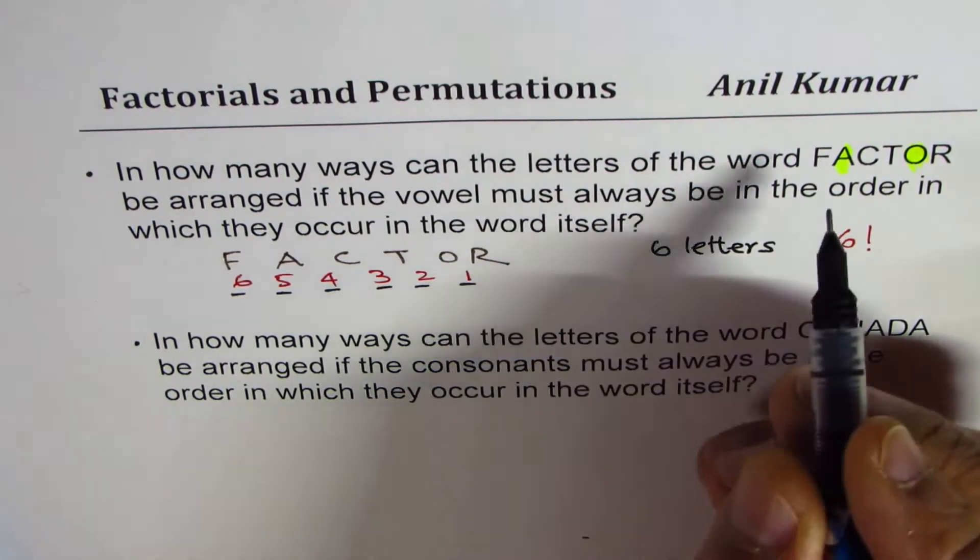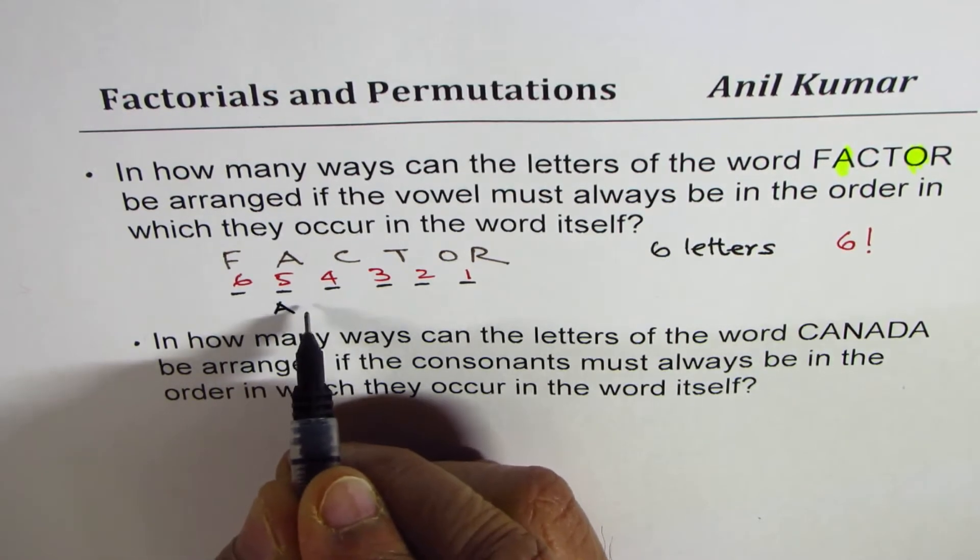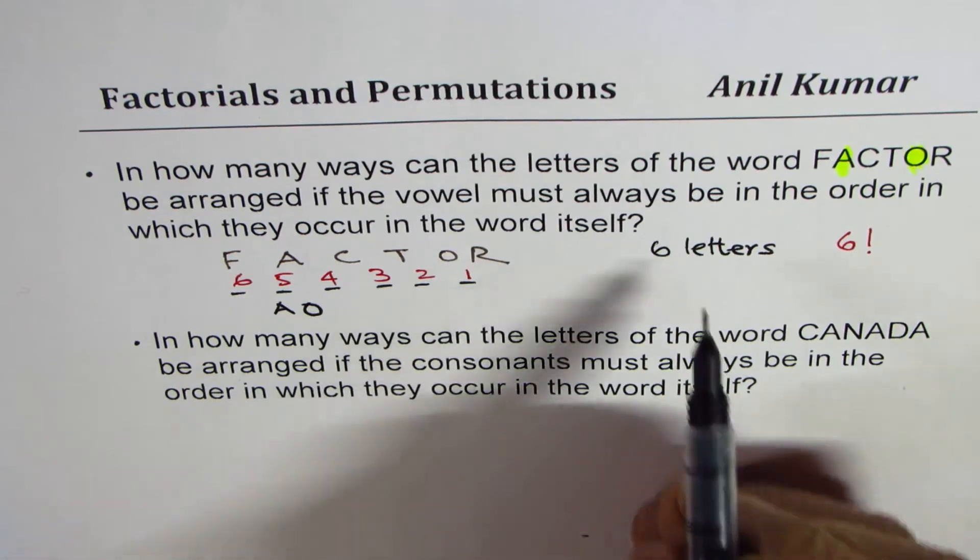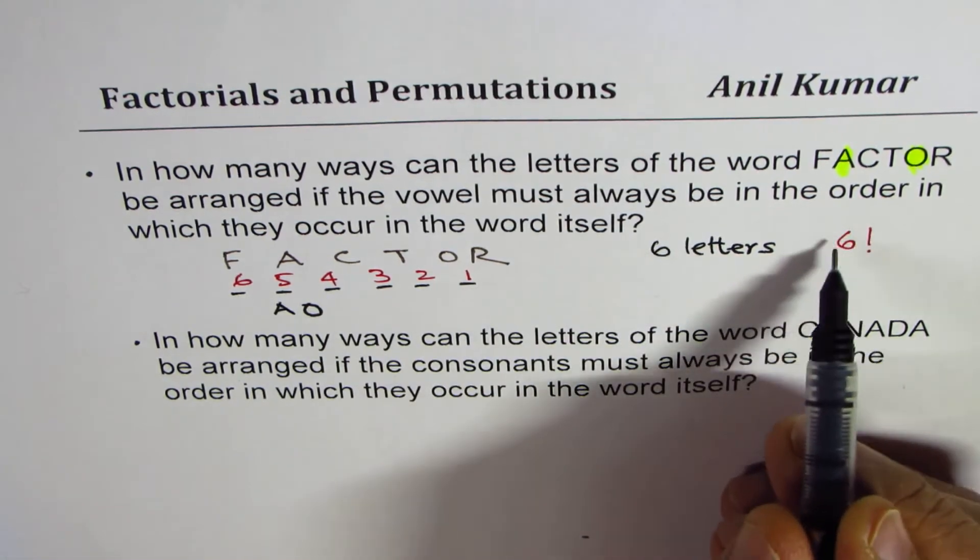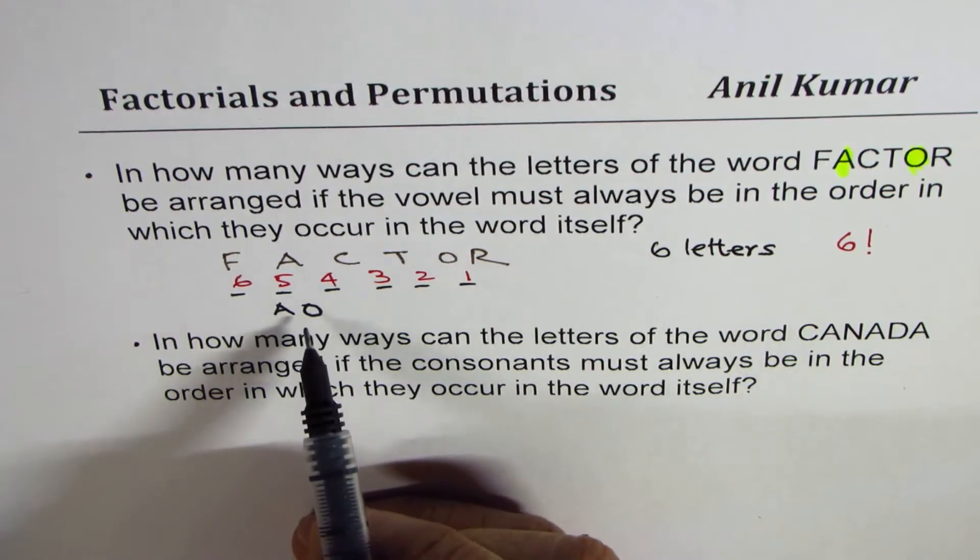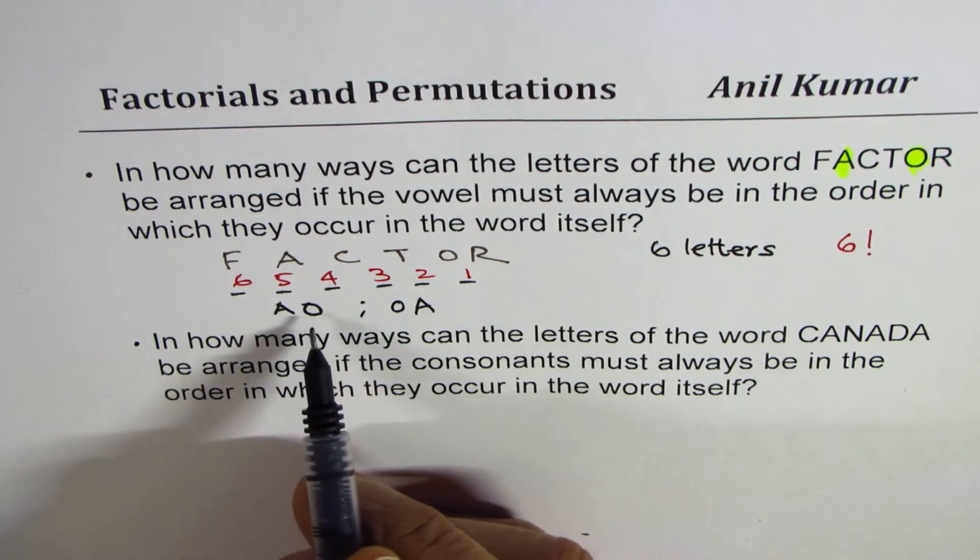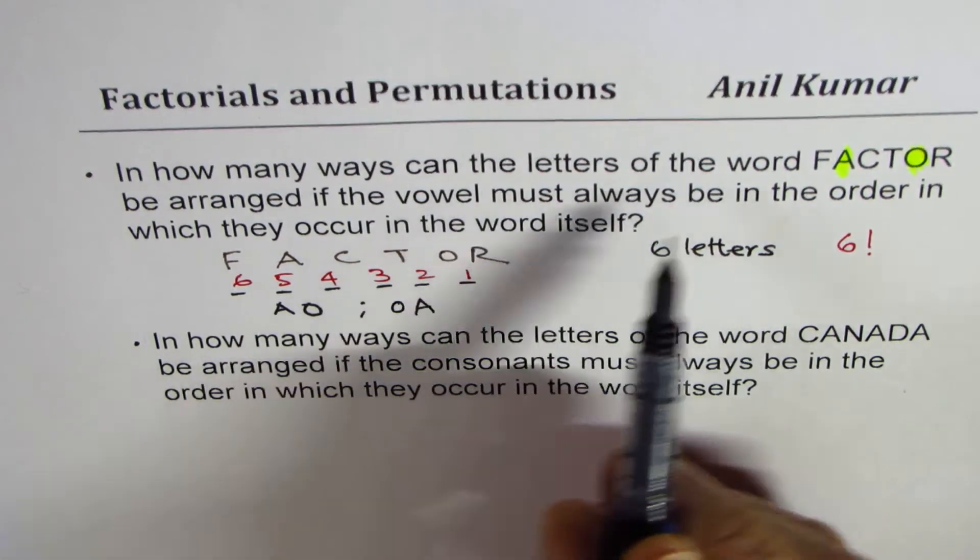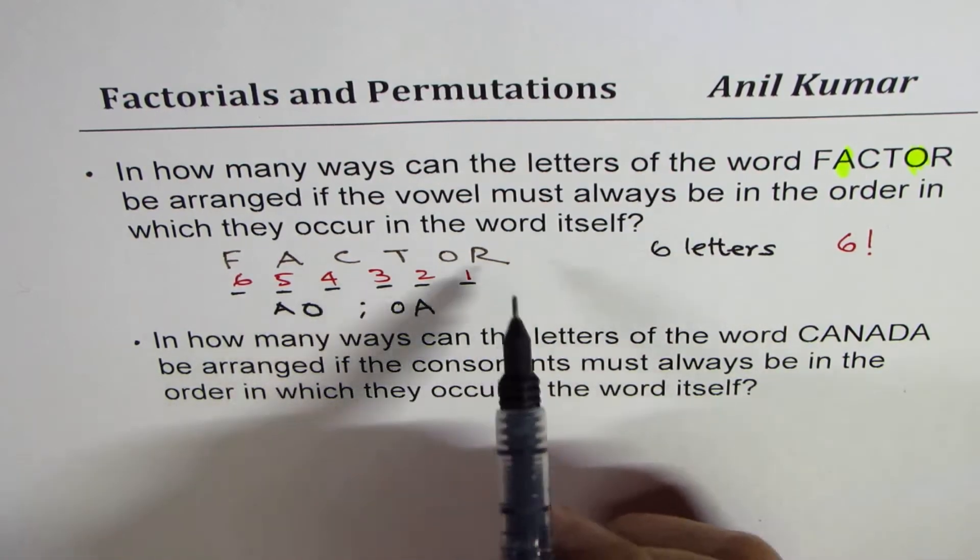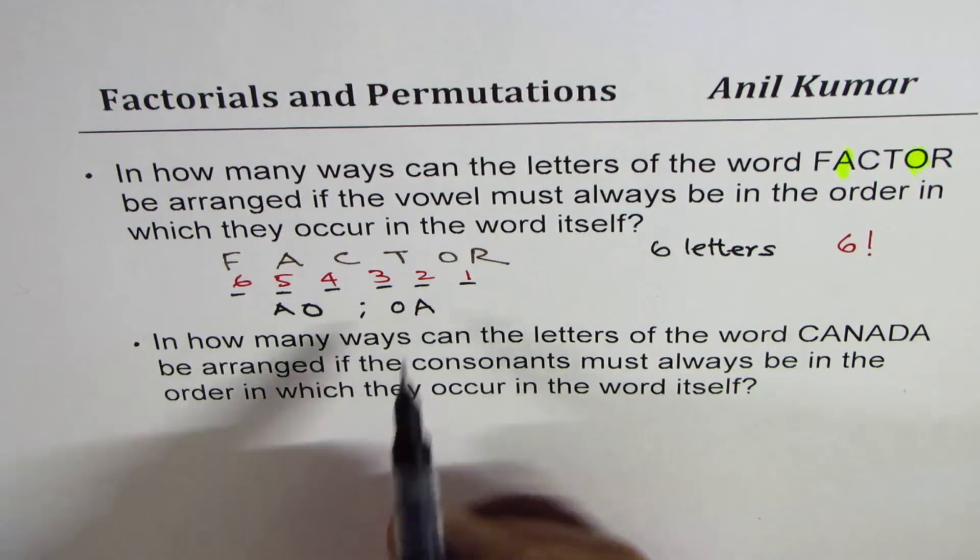Now we want the order of vowels to be A followed by O. So that should be the order. Amongst all these 6 factorial ways, there could be half with OA order and half with AO order. Therefore, the number of ways in which we can arrange these letters is 6 factorial divided by 2.